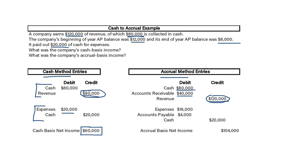For the expenses, the AP balance went from $12,000 down to $8,000. The way you decrease your AP balance is by paying it off. So they must have paid $4,000 of their AP balance for expenses recorded in a prior period. They're paying $20,000 in cash, but $4,000 of it was to decrease the AP balance and the other $16,000 was for expenses. Therefore, they have $120,000 of revenue and only $16,000 of expenses, so accrual basis net income is $104,000.